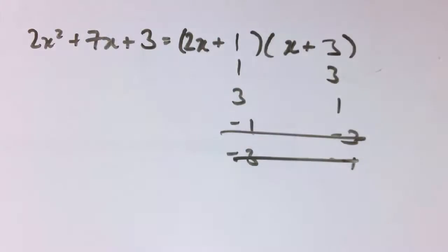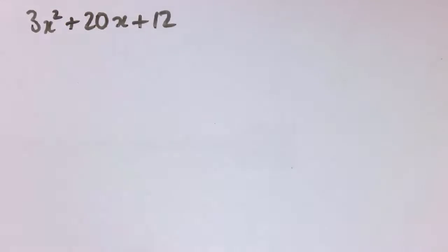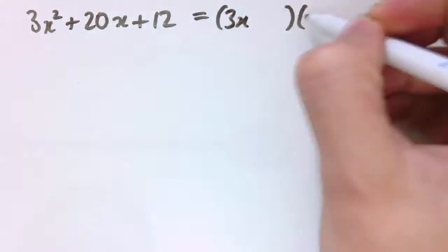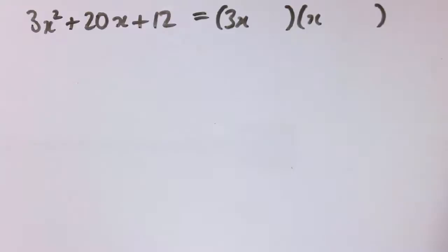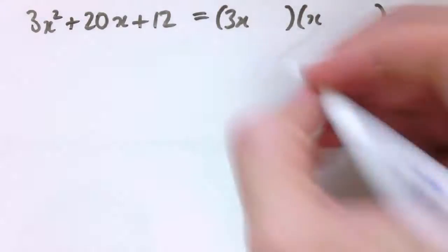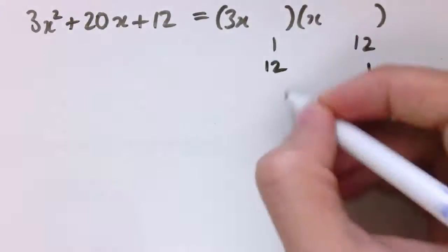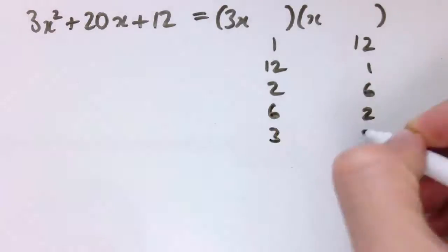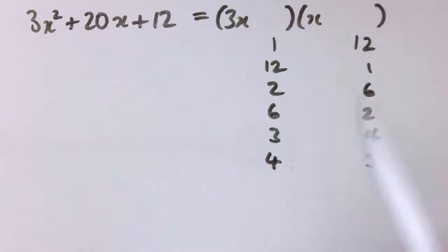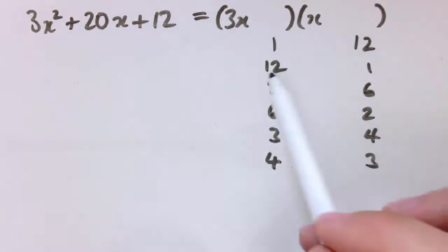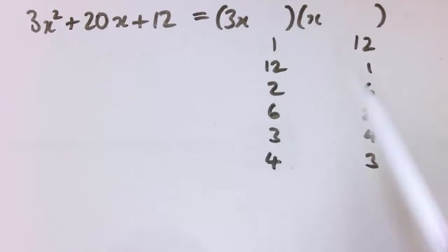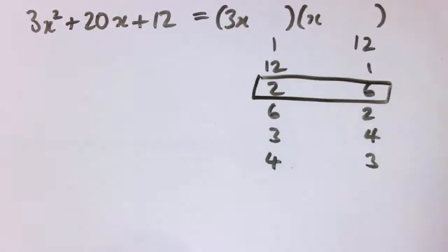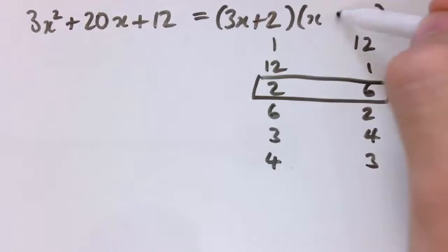Trial and error often finds the answer early on, so even with 5 or 6 options you wouldn't usually have to check all of them. Here's another one: 3x squared plus 20x plus 12. The 3x squared term can only be 3x and x. For 12, the positive factor pairs are 1 and 12, 2 and 6, or 3 and 4, each either way around. Trying 1 and 12 gives x and 36x; 3 and 4 gives 12x and 3x — that's 15x; 2 and 6 gives 2x and 18x — that gives 20x, so it's 3x plus 2 times x plus 6.